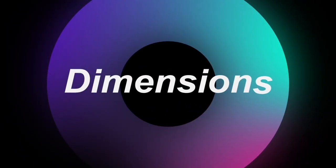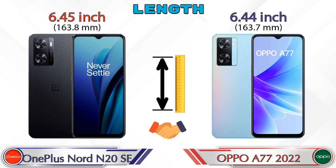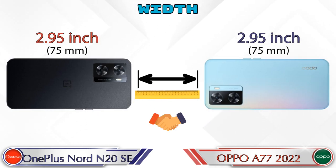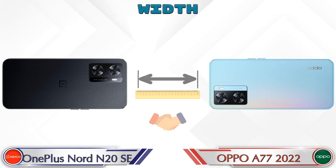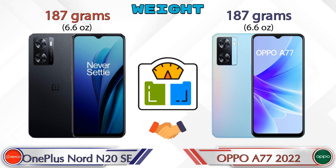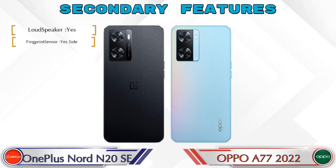Now let's check the dimensions. The length of the Nord N20 SE is 6.45 inches and the A77 2022 is 6.44 inches, which are almost the same. The width is the same in both phones at 2.95 inches. The weight of both phones is 187 grams.